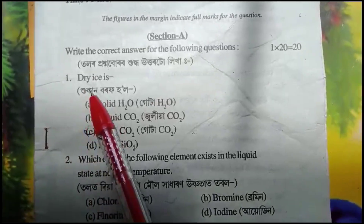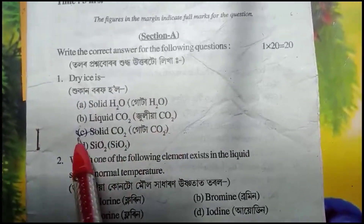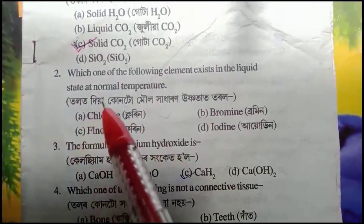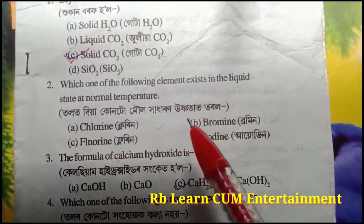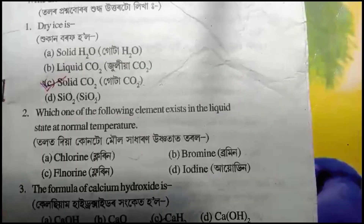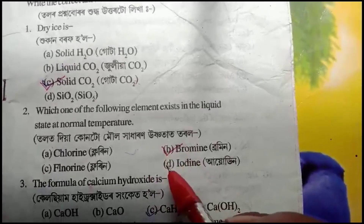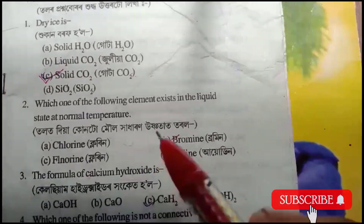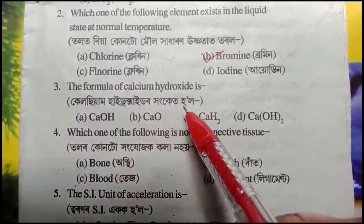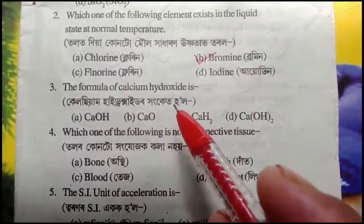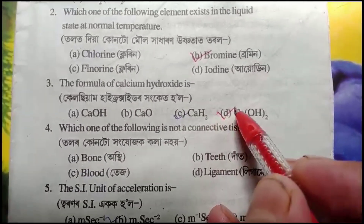Question number 1: What is dry ice? The answer is solid carbon dioxide. Question number 2: Which one of the following elements exists in the liquid state at normal temperature? The answer is B — Bromine. The formula of calcium hydroxide is Ca(OH)₂.